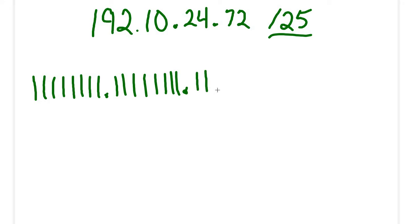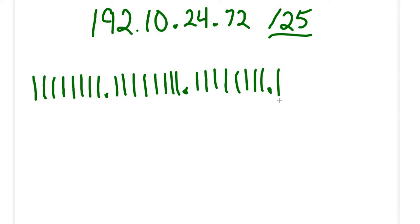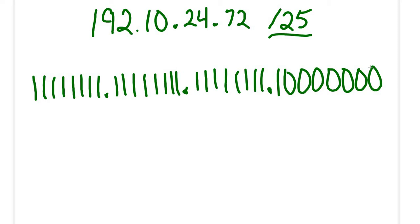Continuing: 17, 18, 19, 20, 21, 22, 23, 24, 25 — that fills the third octet. Now that I've got my 25 ones, I'm going to place the rest of them as zeros: 26, 27, 28, 29, 30, 31, 32. So that is our subnet mask.